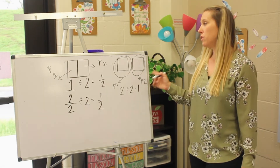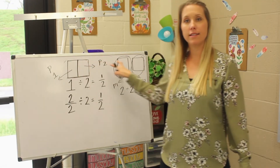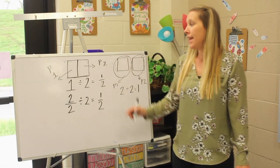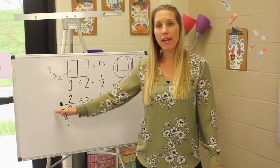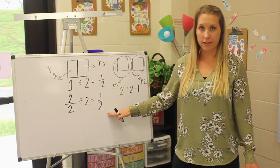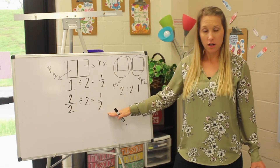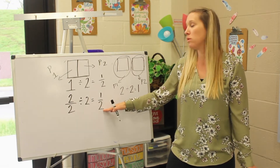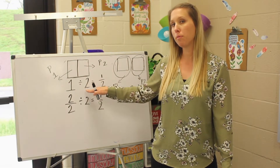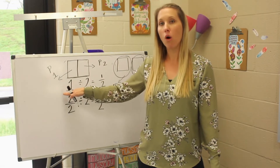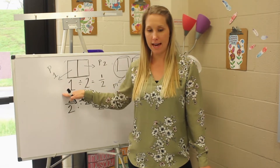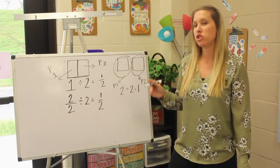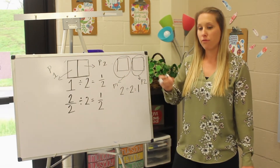Did you notice that in both examples we started off with whole numbers? But in the second example, we ended up with a fraction as our answer. The reason we ended up with a fraction is because we were splitting into more pieces than the amount of wholes we had. We are going to work today on writing division expressions as fractions.